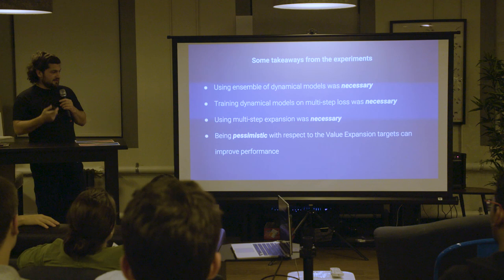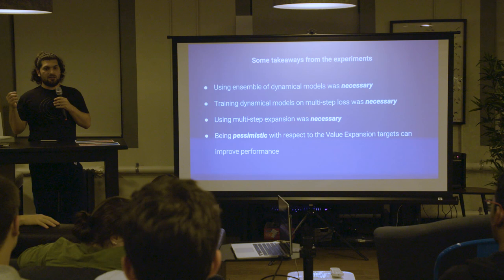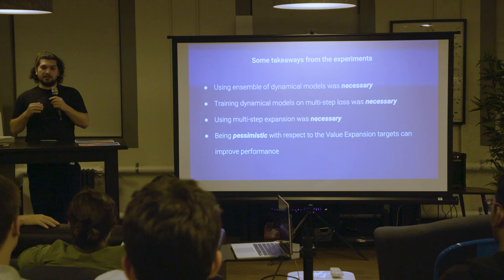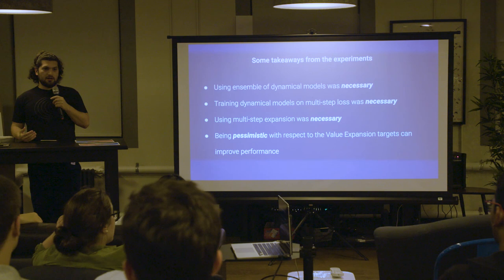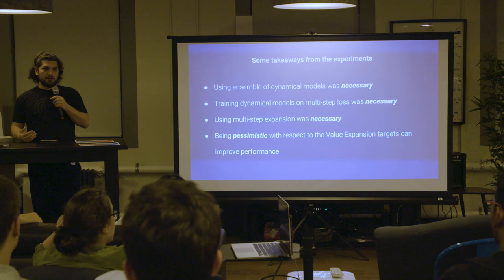One quite interesting finding is that being pessimistic seems to help. When you get the multiple horizon targets, rather than taking an average or exponential average like TD Lambda, taking a minimum over the different horizons seems to do better in the harder environments. This is similar to double Q learning, where you're essentially trying to kill some of the overestimation bias of your Q function.